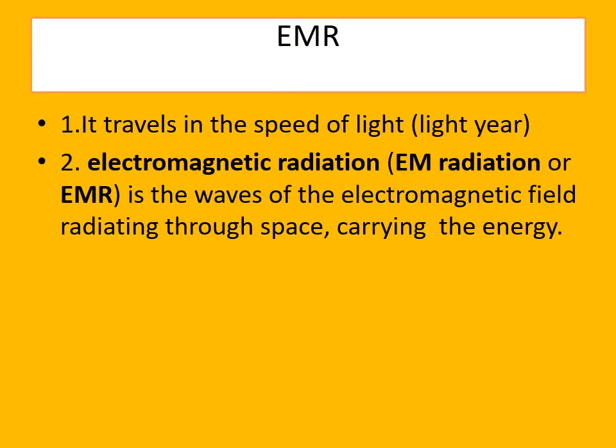The first and foremost requirement for the remote sensing process is energy — energy to illuminate the target, illuminate the Earth's surface, and illuminate Earth's objects. This energy comes in the form of electromagnetic radiation. Electromagnetic radiation plays a vital role in remote sensing, whether it is passive or active remote sensing. The EMR travels at the speed of light, and after reaching the Earth's surface, it is re-radiated back to space and recorded by the artificial satellite.